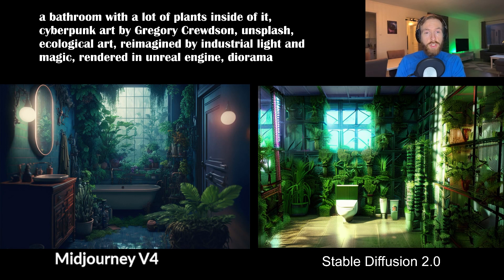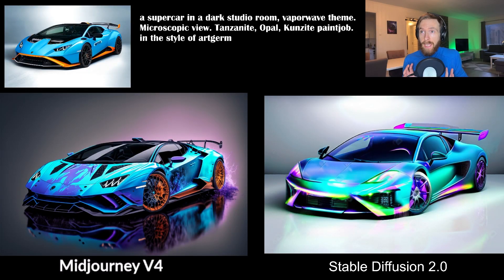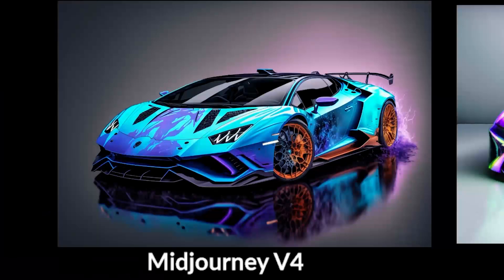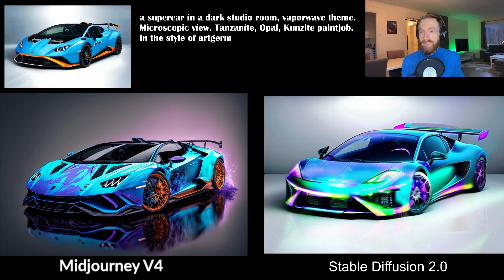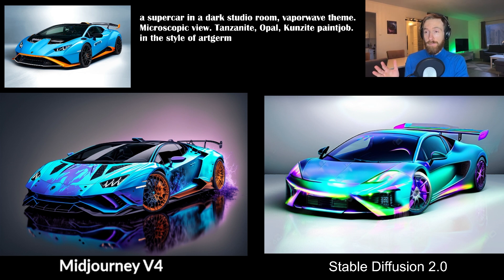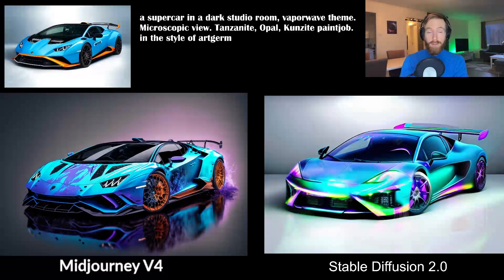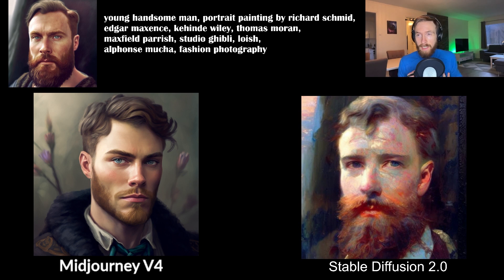For the first image-to-image comparison, the input image is a Lamborghini and the prompt is a supercar in a dark studio room with a vaporwave theme. MidJourney just blows it out of the water with the details, composition, and realism. That's not to say I dislike the Stable Diffusion version — it's cool — but it's not at the same level. Though if you train the open-source Stable Diffusion 2.0 on a car dataset you could probably get much better results.